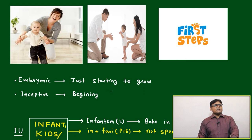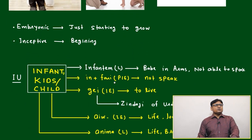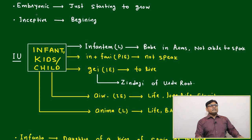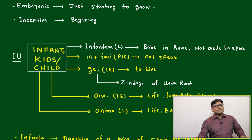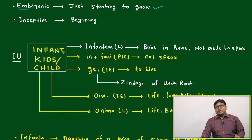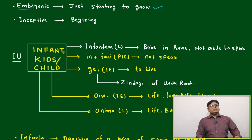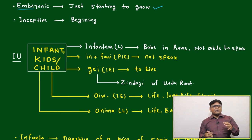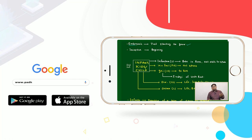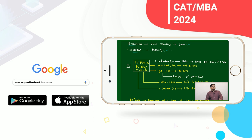The first step will be there — they will start to walk. Embryonic means just starting to grow. After taking birth, or after pregnancy, we say the baby is in the embryonic stage — meaning just starting to grow. Inceptive means beginning; inception means started.